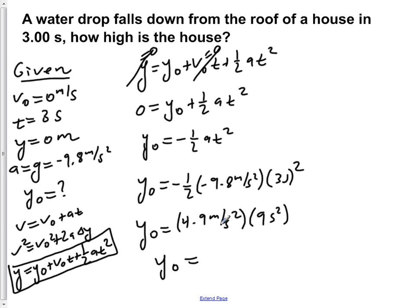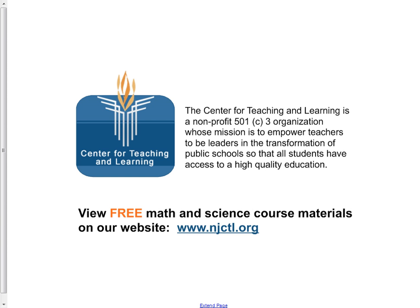Now if we simply carry out this multiplication here, we would see that our initial height is 44.1 meters.